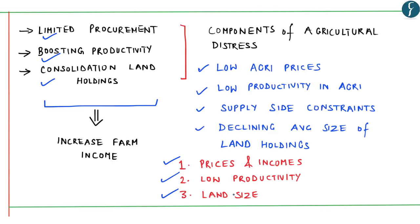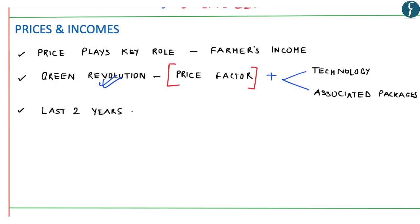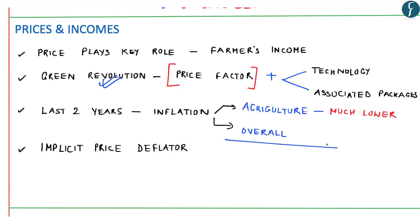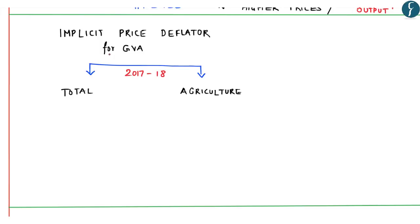Let's go through these three different concepts separately. Price plays a key role in affecting farmers' income, and even during the Green Revolution, along with technology and associated packages, the price factor was considered extremely important. However, in the last two years, inflation in agriculture has been much lower compared to overall inflation. The article highlights this through the implicit price deflator — a measure of inflation showing to what extent an increase in GVA has taken place on account of higher prices rather than increased output. The implicit price deflator for GVA for 2017-18 for total is 3.2% whereas for agriculture it is only 1.1%.